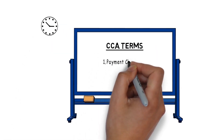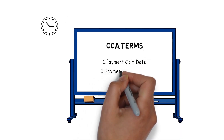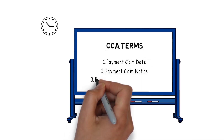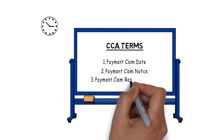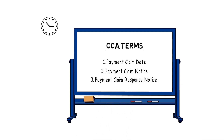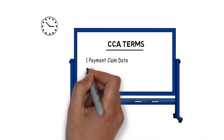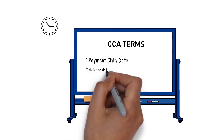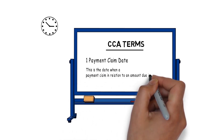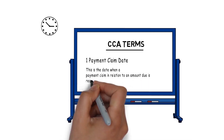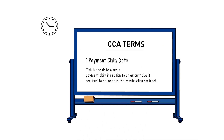1. Payment claim date. 2. Payment claim notice. 3. Payment claim response notice. The payment claim date is the date when a payment claim in relation to an amount due is required to be made in the construction contract.